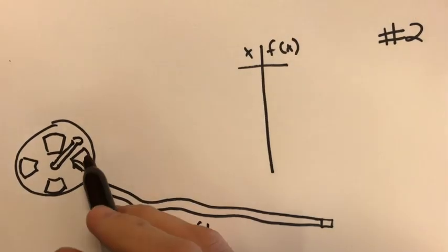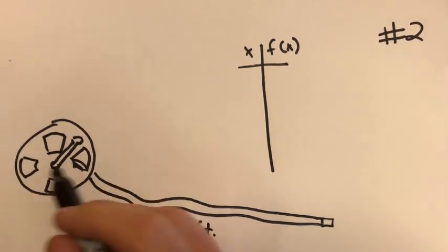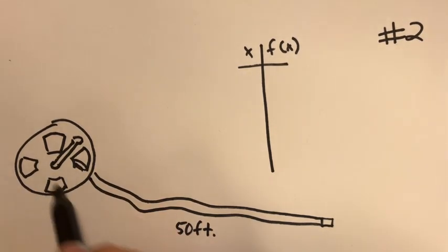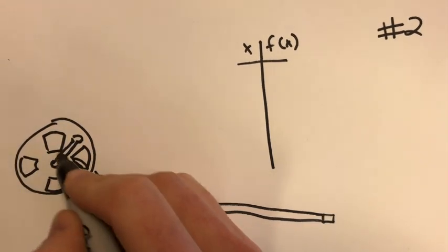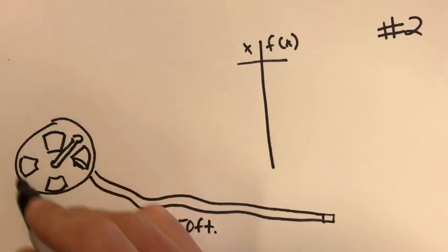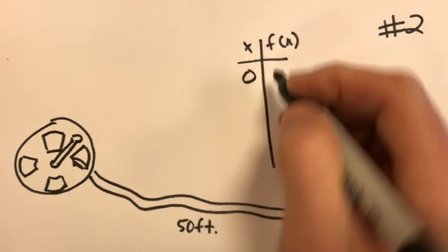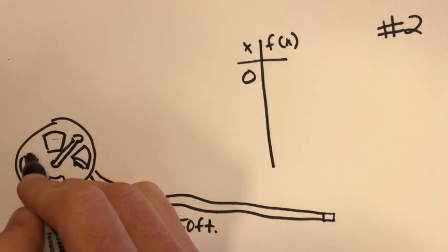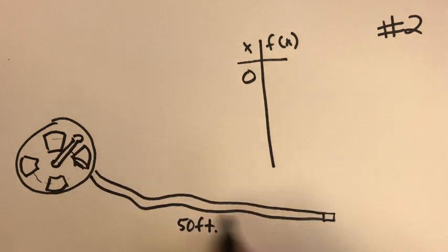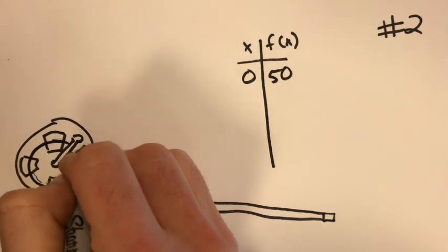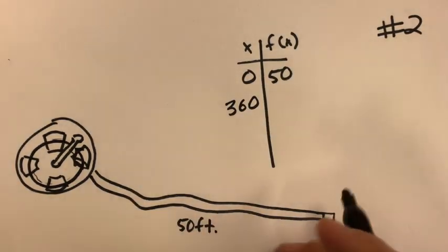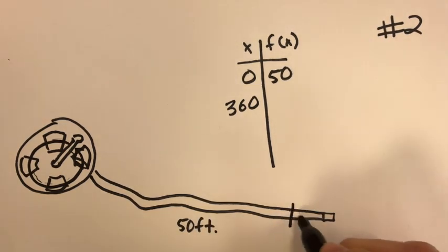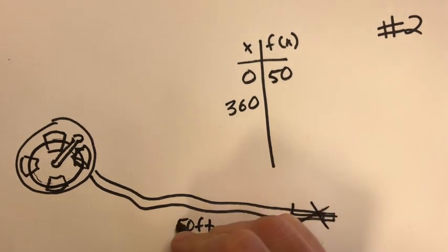In this example we've got a hose wheel. We're going to be reeling in this hose. Currently it's extended out to 50 feet, and here's the lever. We're going to be pulling this and this hose is going to wrap around and get pulled in. So at zero degrees we're measuring the angle of rotation, the hose is 50 feet. Now we're going to twist it one time all the way around, so that's a 360 degree turn, and after that it takes four feet off the hose, so now instead of 50 it's actually 46 feet.